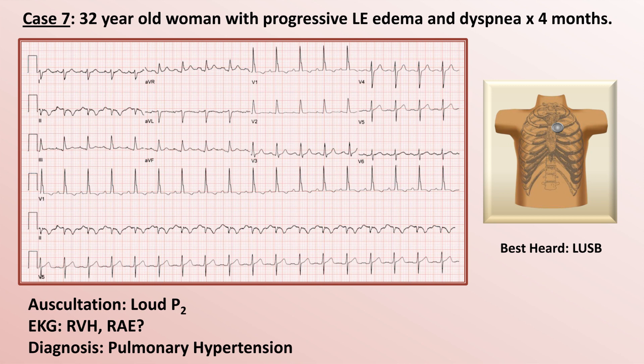We can't determine the cause without more information, but in a 32-year-old woman the most likely etiologies are primary pulmonary hypertension, chronic thromboembolic disease, or a rheumatologic process such as scleroderma, lupus, or rheumatoid arthritis.